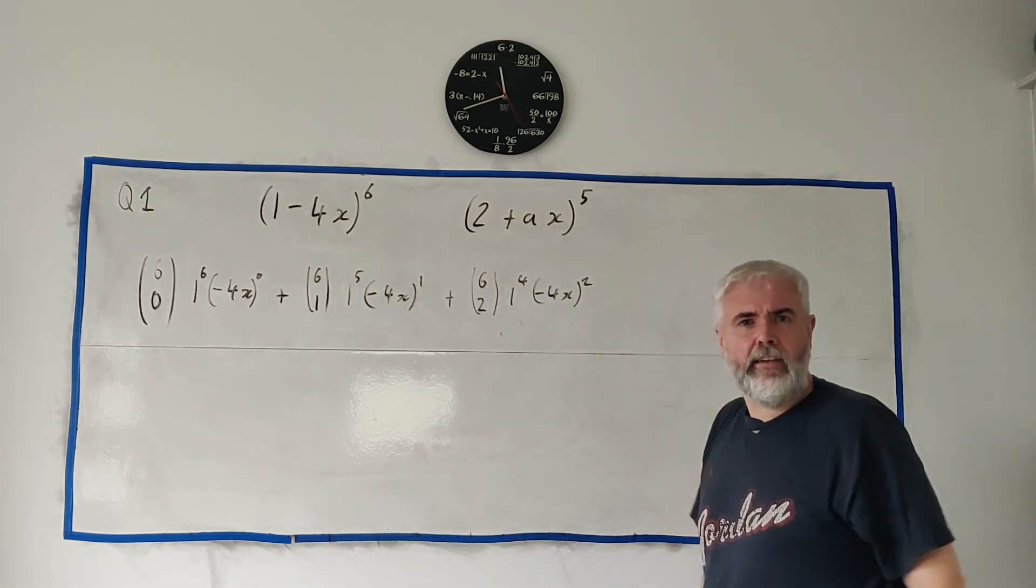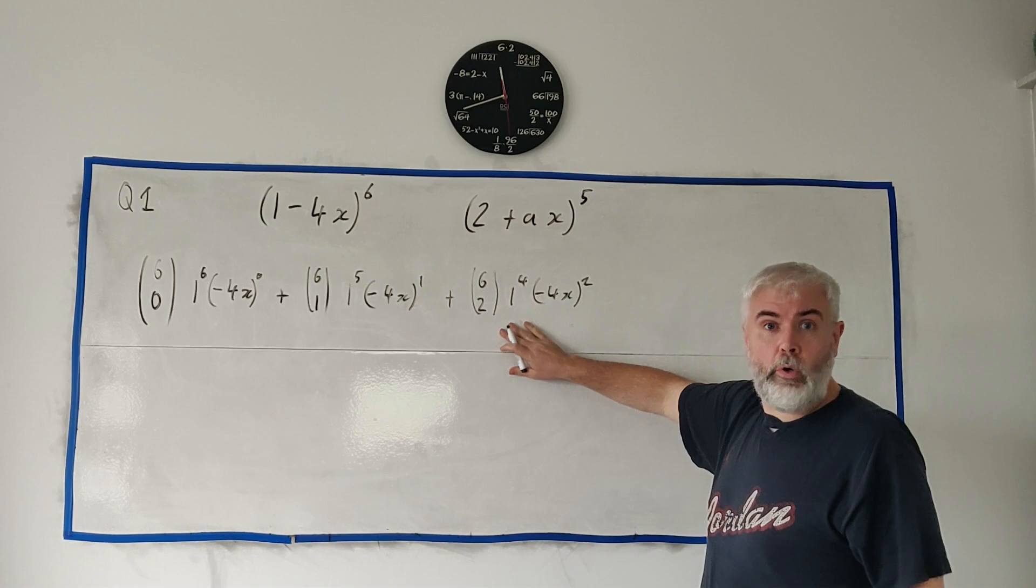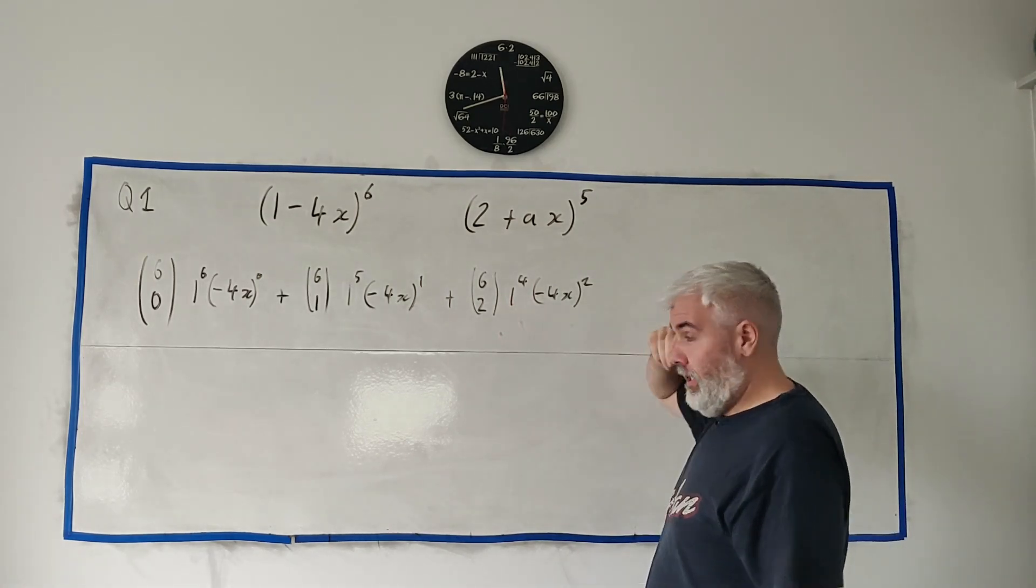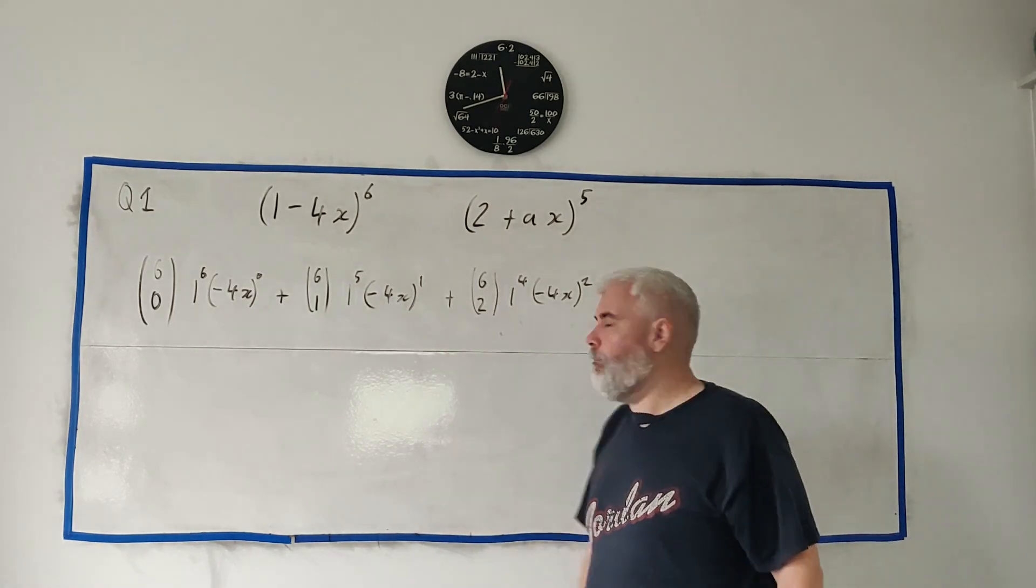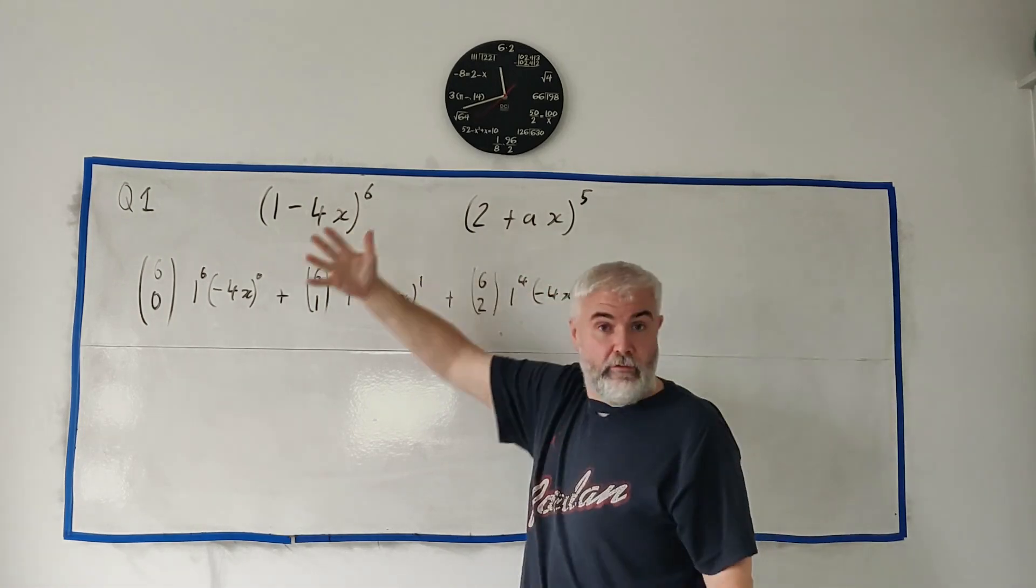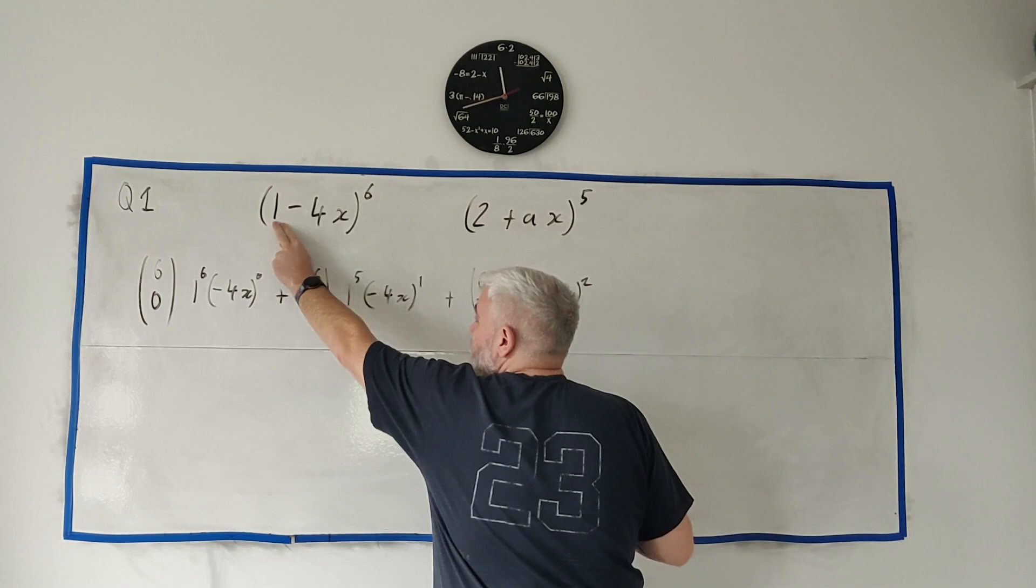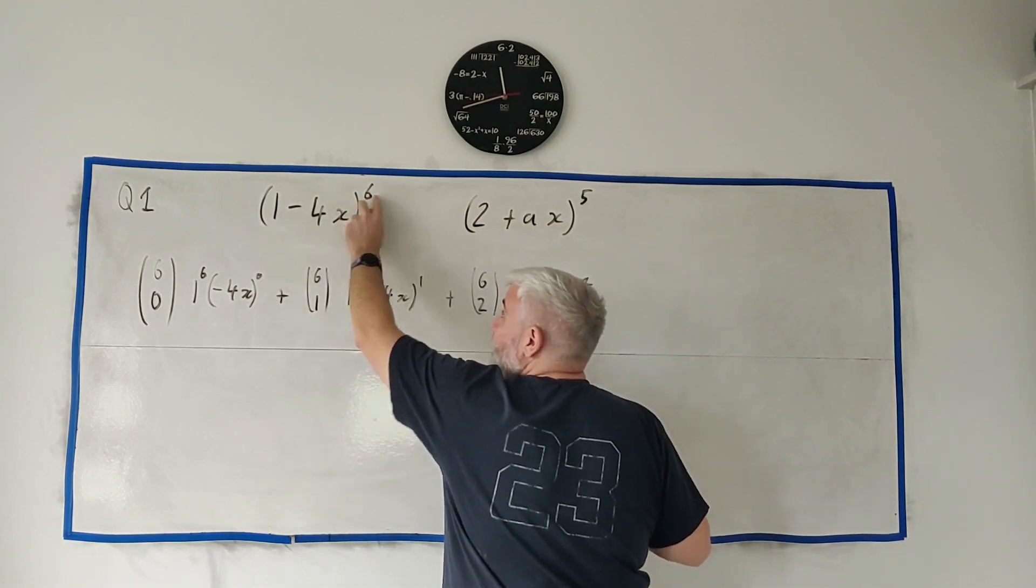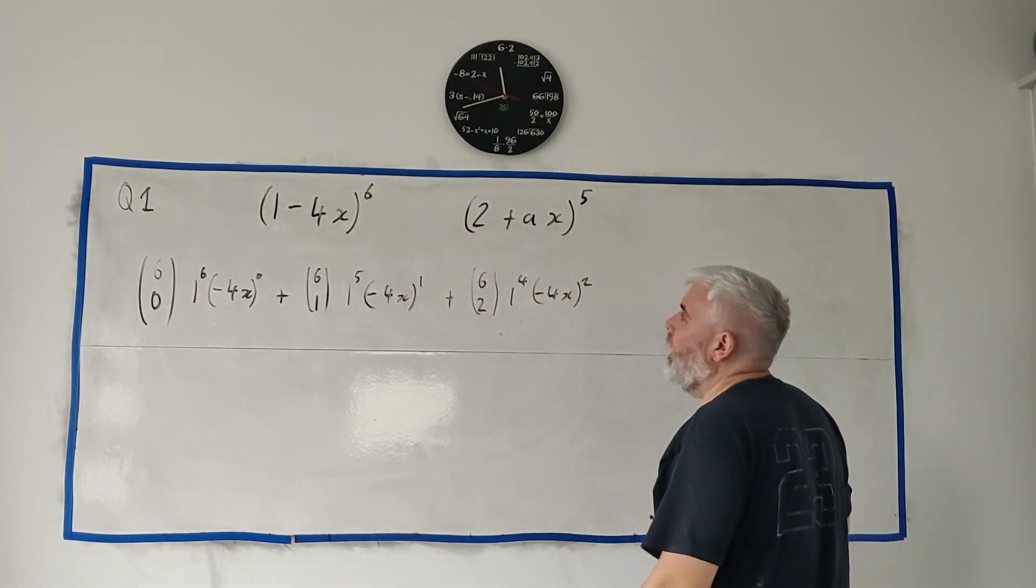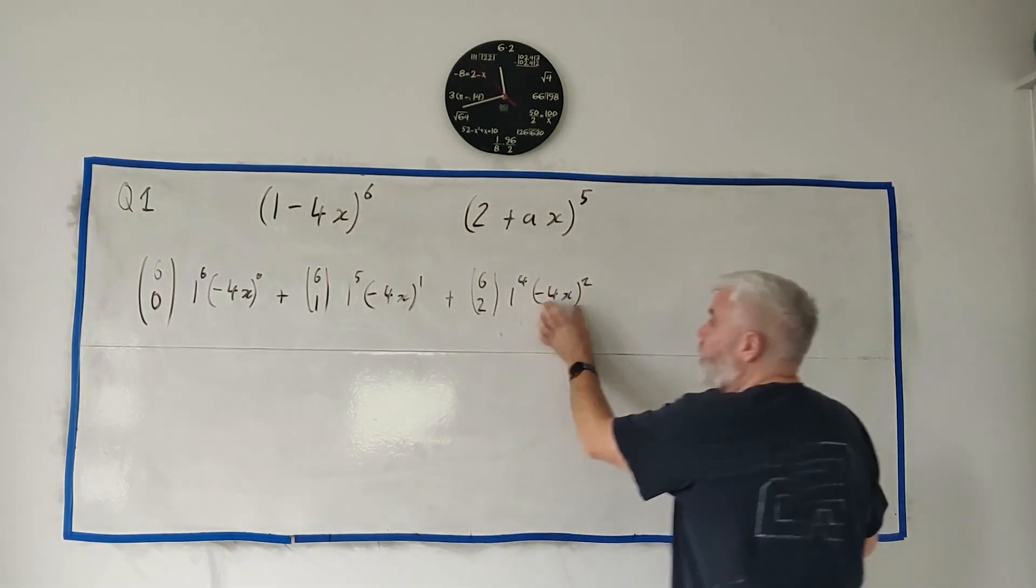And it's okay if you skip straight to this line as we'll do on the next one. It's okay if you just know this rule, so if you want the second term, or the power of 2 term, because it's really the third term, it's whatever power is here, 6 choose whichever one you're looking for, in this case 2. It's the other term, the one you're not interested in, it's that to the power of 6 minus 2, or 4 in this case. And then it's the term you're interested in to the power you want, so that one to the power of 2.